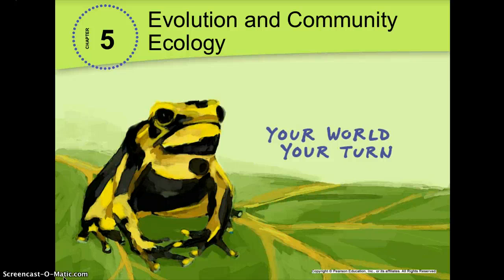Chapter 5: Evolution and Community Ecology. In this chapter we have four basic lessons. Lesson 1 deals with evolution. Lesson 2 is a really cool topic on species interactions. Lesson 3 talks about ecological communities. And Lesson 4 talks about community stability.